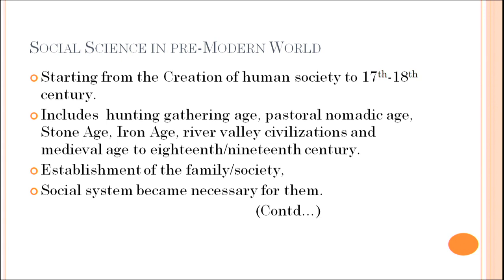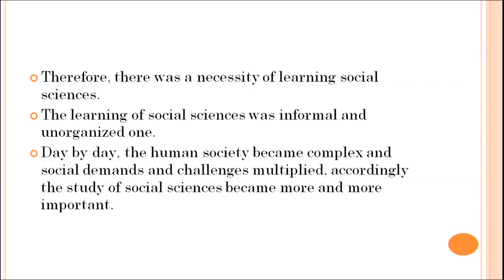Here we see the establishment of family and society, later paving the way for the establishment of society. As family and society were formed, a social system became necessary. Therefore, there was a necessity of learning social sciences. The learning of social sciences was informal and unorganized in the beginning — it was not a formal area of study, there was no content, and it was not a subject of study.